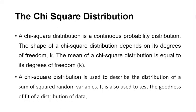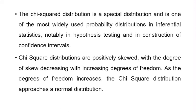The next one is the chi-square distribution. A chi-square distribution is a continuous probability distribution. The shape of a chi-square distribution depends on its degrees of freedom, and the mean of a chi-square distribution is equal to its degrees of freedom. A chi-square distribution is used to describe the distribution of a sum of squared random variables. It is also used to test the goodness of fit of a distribution of data. The chi-square distribution is one of the most widely used probability distributions in inferential statistics, notably in hypothesis testing and in the construction of confidence intervals.